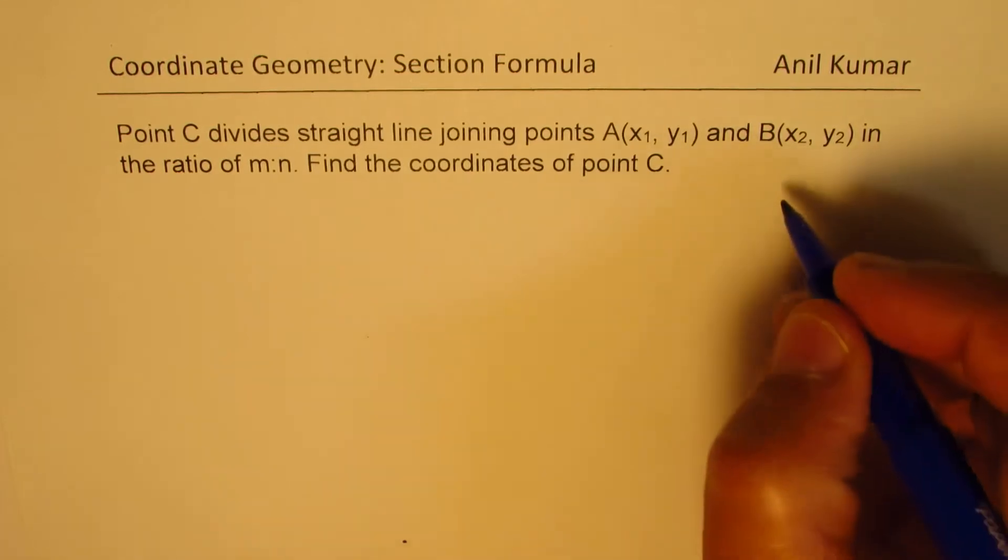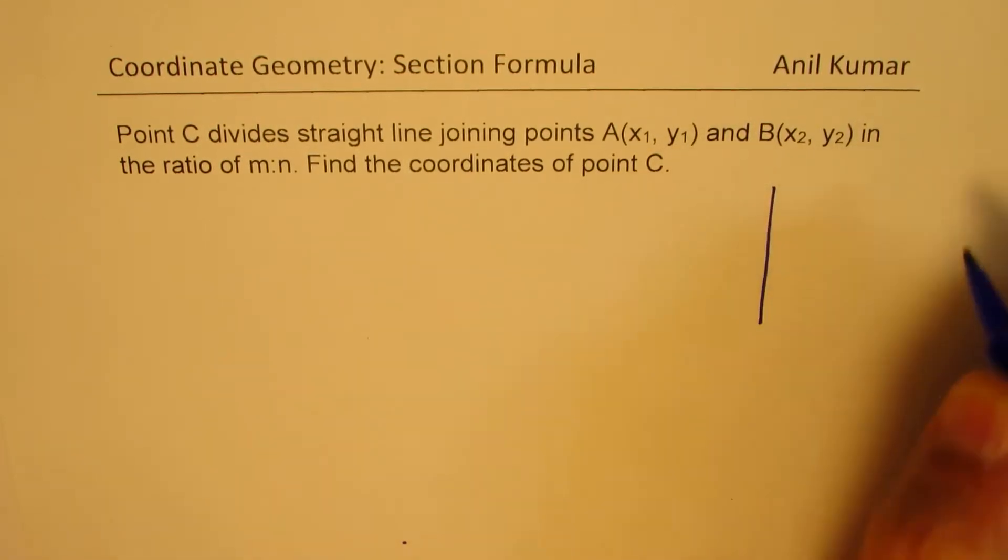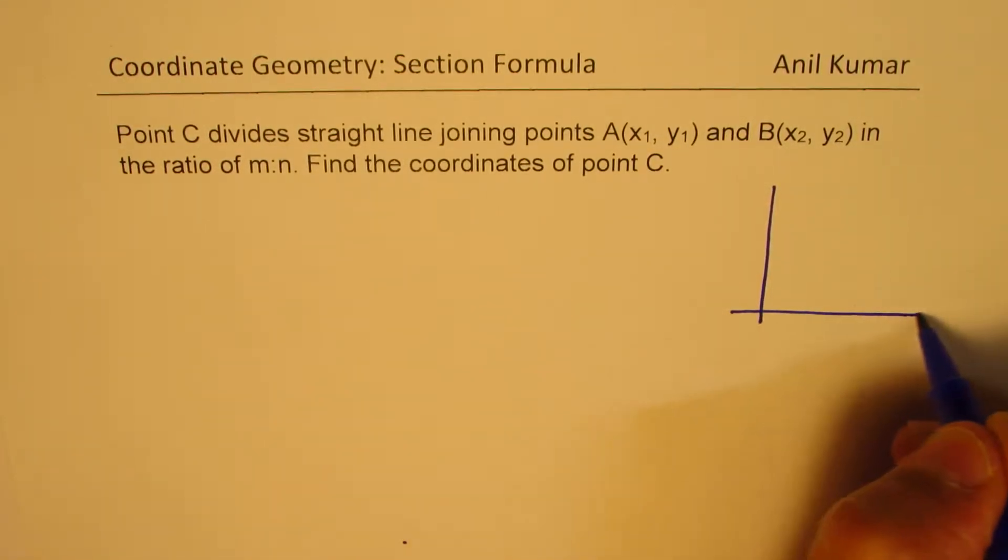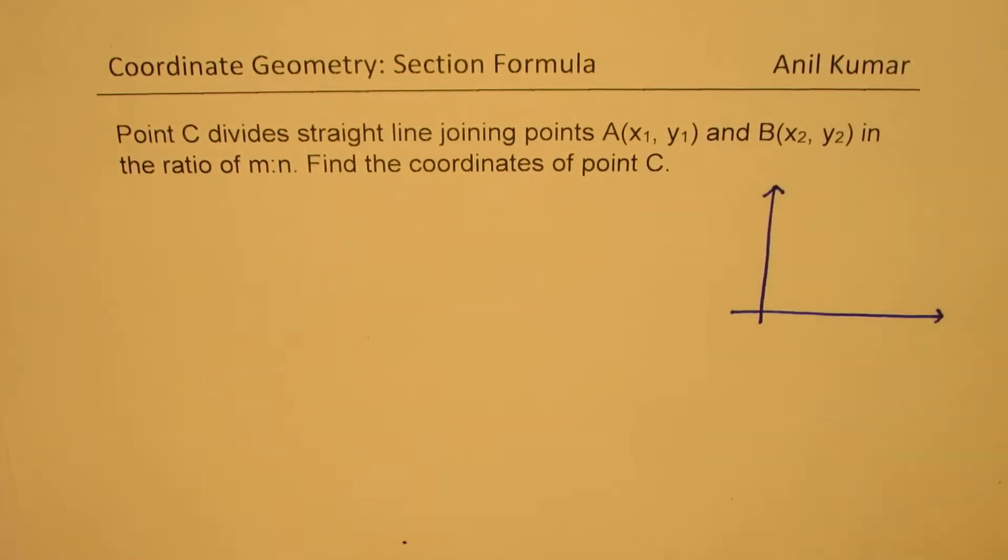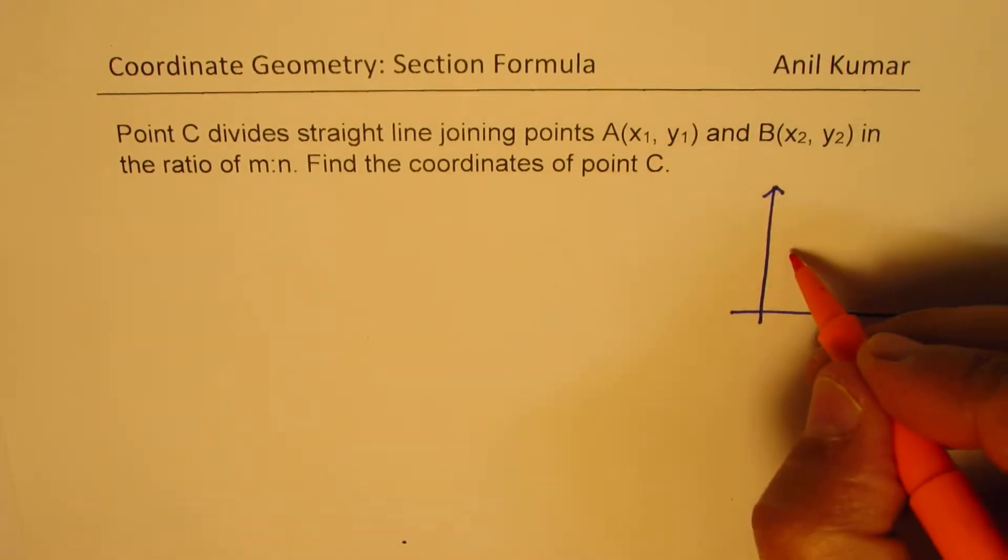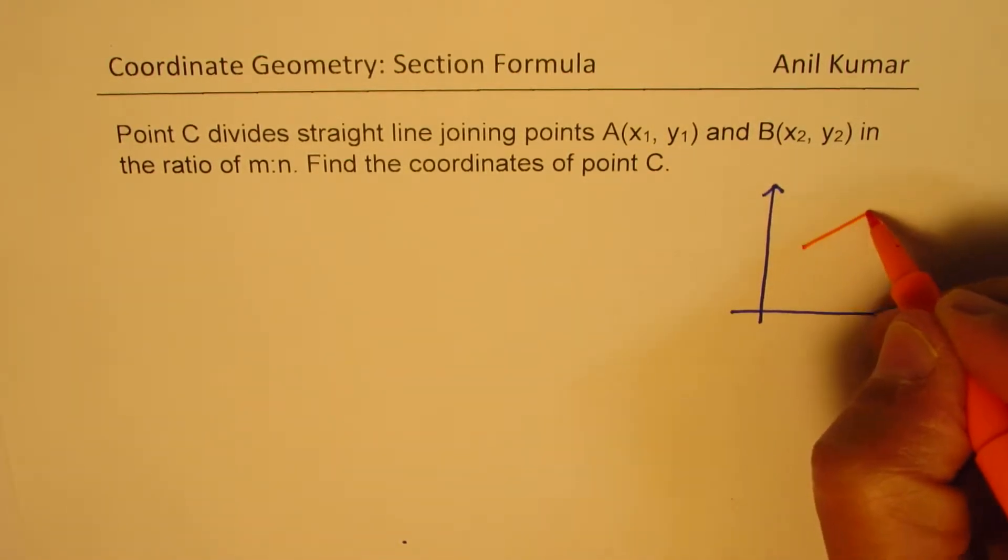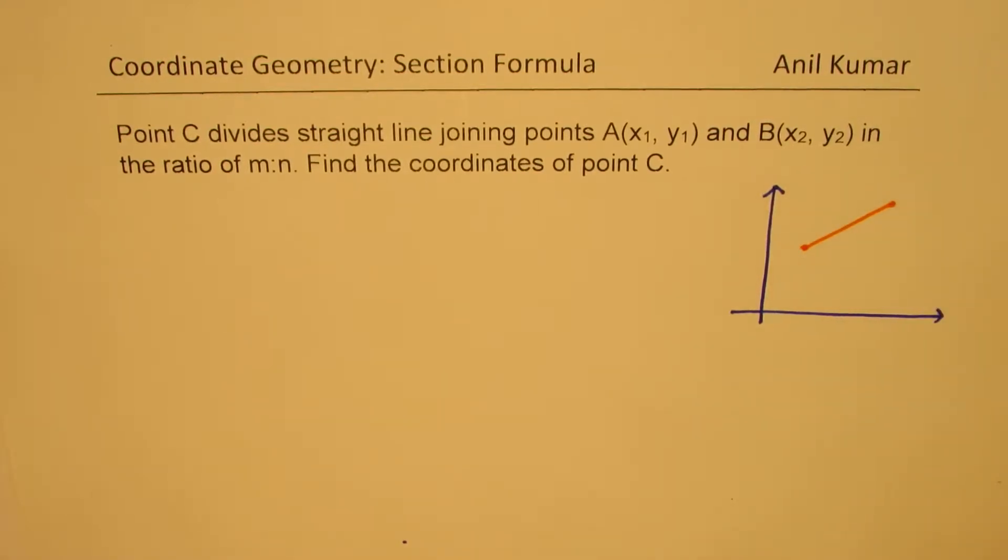So let us sketch the scenario and then we will work out a formula. It is based on similar triangles concept. So we are given two points. Let us assume these two points to be as shown here, A and B.